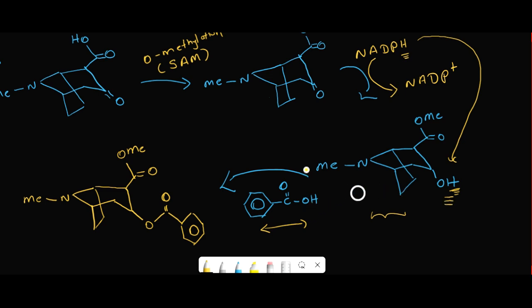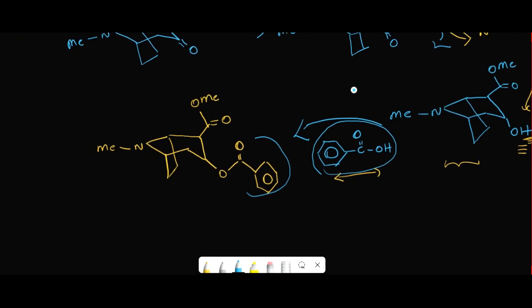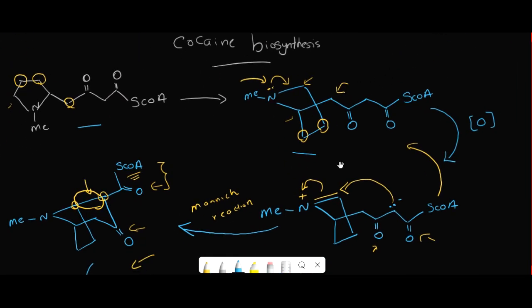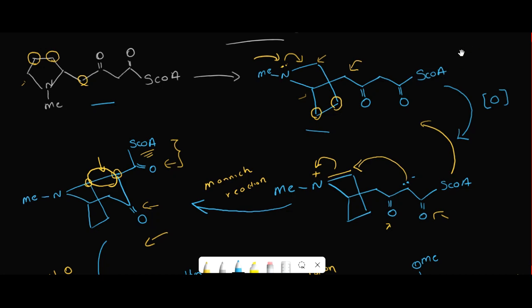These two compounds will react together. Here we have the newly introduced compound, and esterification happens. So this is our final product - this is called cocaine. This is the biosynthesis method of cocaine. I hope you understand it. Let's meet you in the next video.